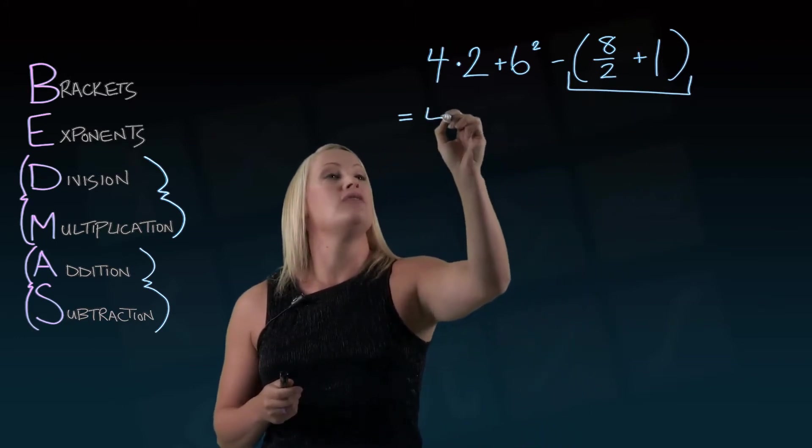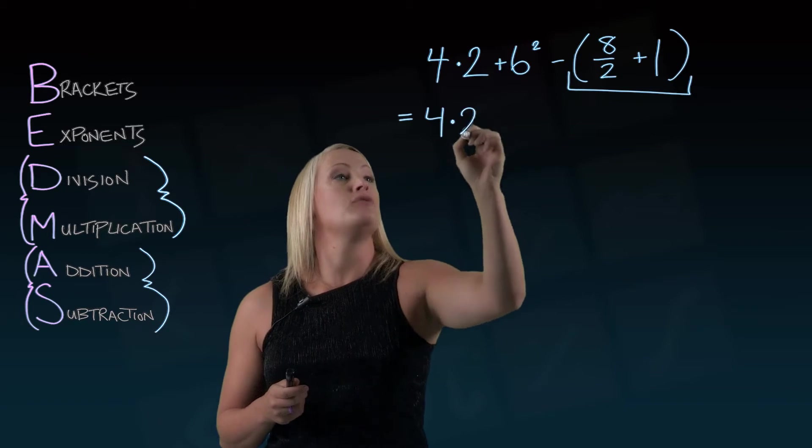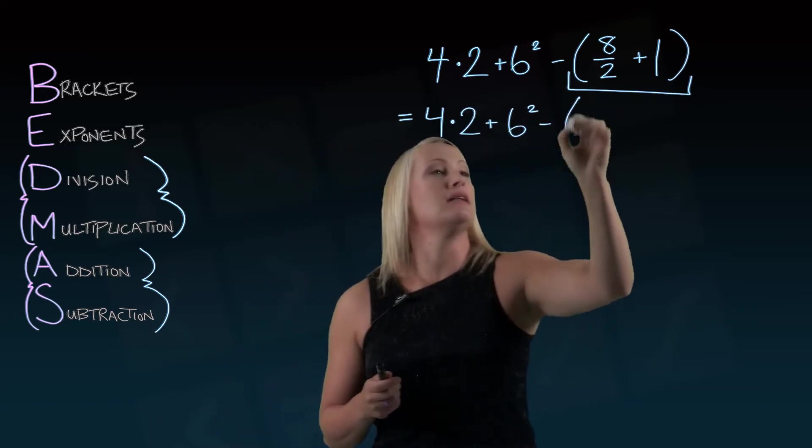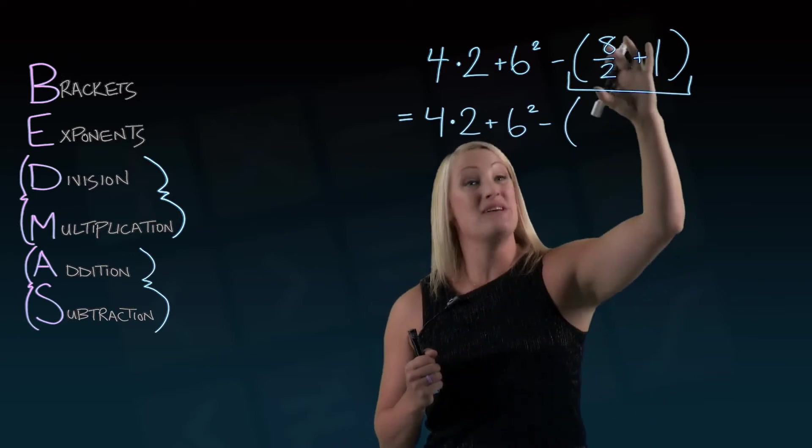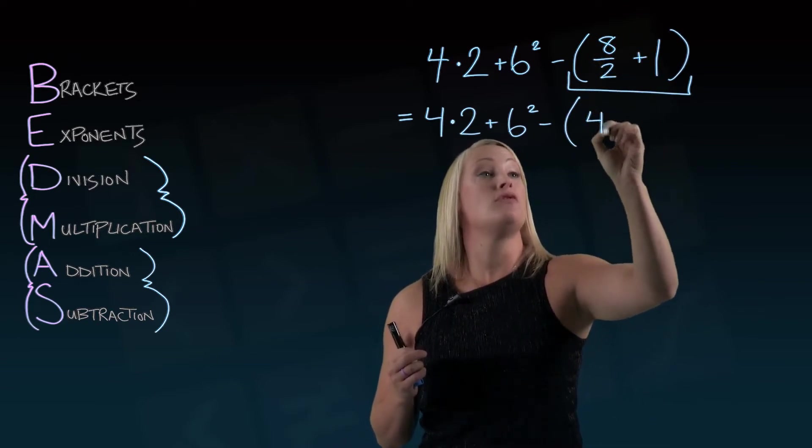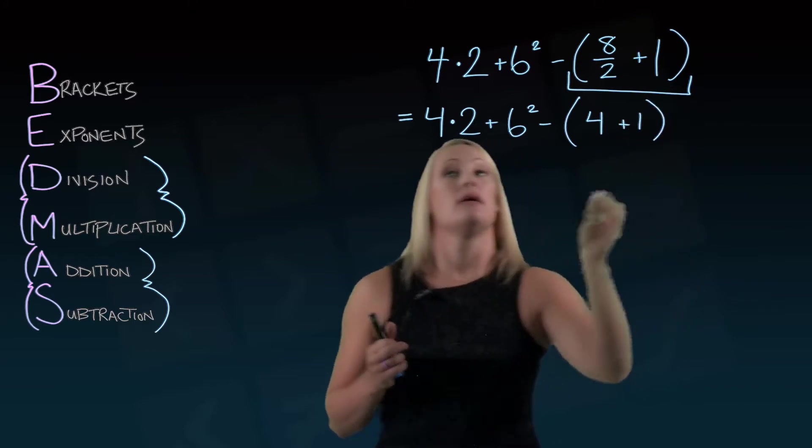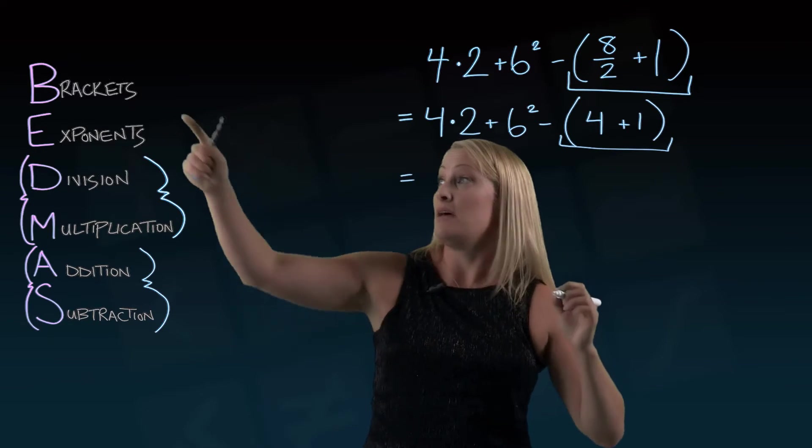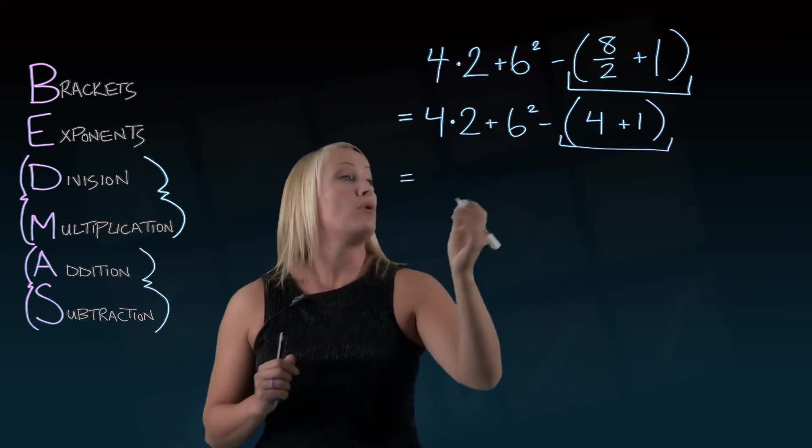So let's leave the rest of this alone. 4 times 2 plus 6 squared. Subtract. I'm going to leave the brackets intact. I'm going to deal with 8 divided by 2 first. And 8 divided by 2 is 4. And then on my next line, I can complete the brackets. So 4 plus 1 is 5. Everything else stays the same.